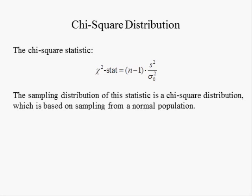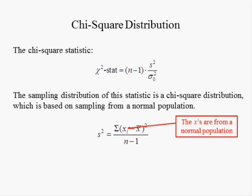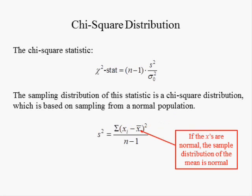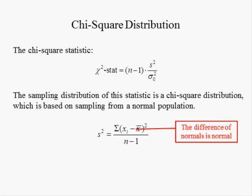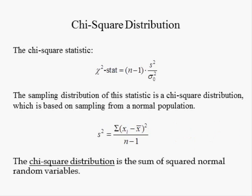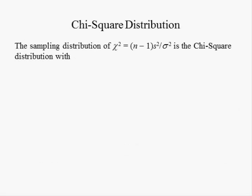The sampling distribution of this statistic is chi-square, which is based on sampling from a normal population. Chi-square stat is a statistic because the sample variance S-squared is a statistic. By assumption, the values of the variable X are drawn from a normal population, so the sampling distribution of the mean is normal. The chi-square distribution is the sum of squared normal random variables, with expected value equal to the sample size minus one and variance equal to two times n minus one, where n minus one is the degrees of freedom.